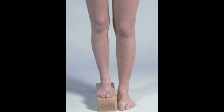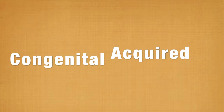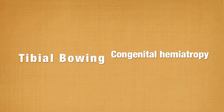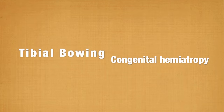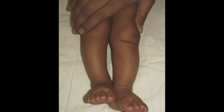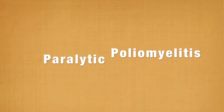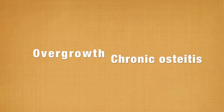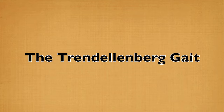The causes of a short leg gait can be divided up into congenital and acquired causes. Some of the congenital causes include developmental dysplasia of the hip, congenital short femur, proximal femoral focal deficiency, bowing of the tibia, congenital hemiatrophy, or congenital hemihypertrophy. Some of the acquired causes include paralytic, as in the case of poliomyelitis, or due to physeal damage, which can either be by trauma or infection, or overgrowth of one leg resulting in a leg length discrepancy, and this can be due to chronic osteitis.